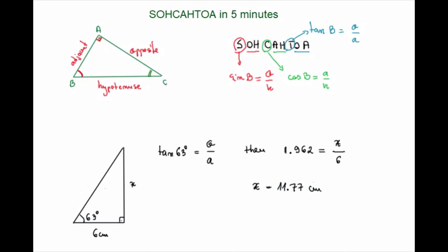So this is how we correctly use SOHCAHTOA in a right-angled triangle — this is the very basic of trigonometry. We can also use SOHCAHTOA to determine angles, not just the lengths of the sides. We will do this in the next lesson.